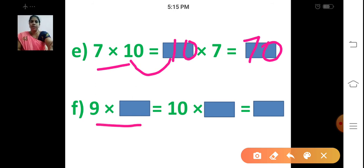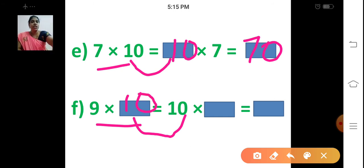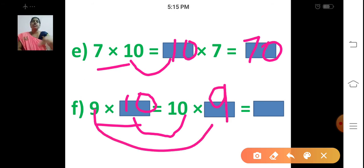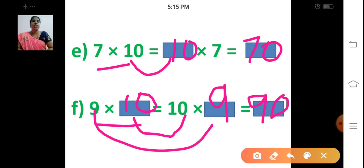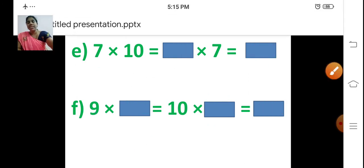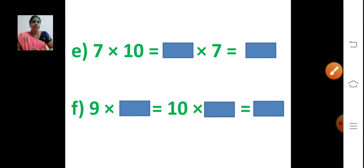Last one — Sum F: 9 into ___ is equal to 10 into ___. Same way, this 10 is missing here. 9 into 10 is equal to 10 into 9. 10 nines are 90. Write down 90. So, revise the tables so that you can do the sums easily.